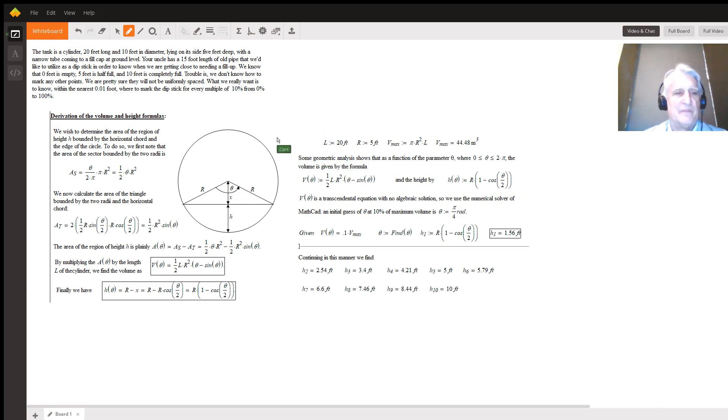We use the MathCAD solver, which requires an initial guess of theta, and then this statement with a logical equal sign that B(θ) has to equal one-tenth of the maximum volume, just to get us the first mark on the stick. The keywords are 'given' and 'find'. We find that value for theta and then put that into the height equation.